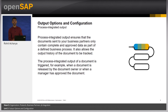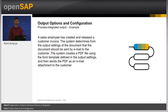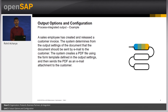The employee responsible for the document can override the default settings prior to submission. For example, when a sales employee creates and releases a customer invoice, the system determines from the output settings that the document needs to be sent to the customer's email. The system creates a PDF file using the form template defined in the output settings and sends the PDF as an email attachment. If no error is returned by the mail server, the output status is recorded as successful in the output history tab of the customer invoice.